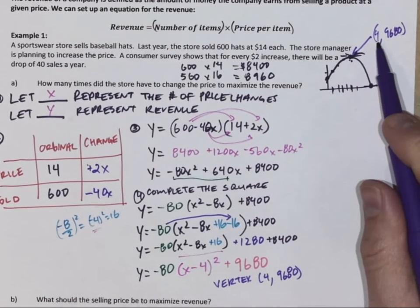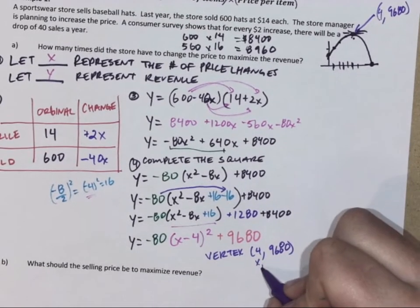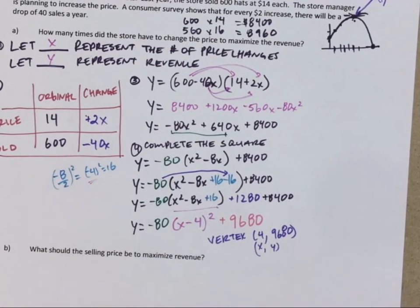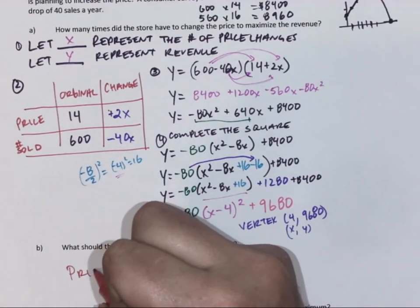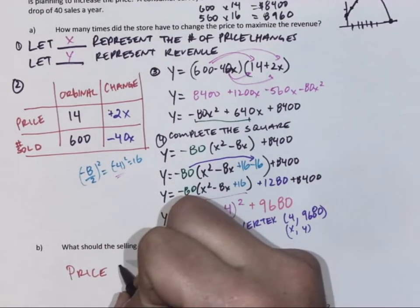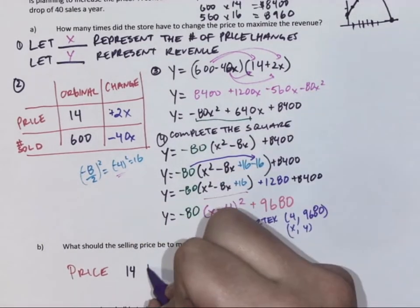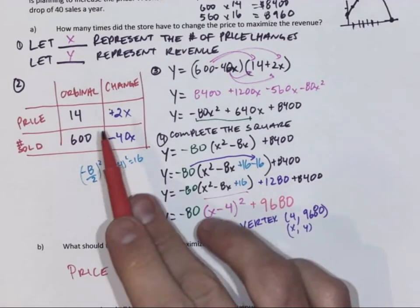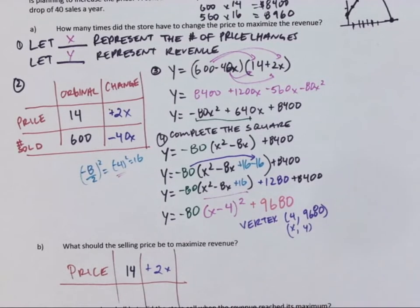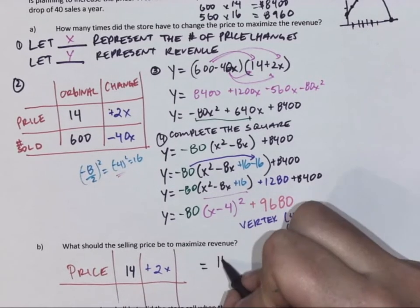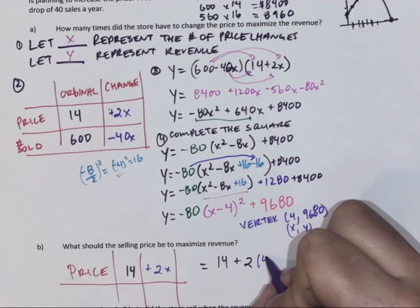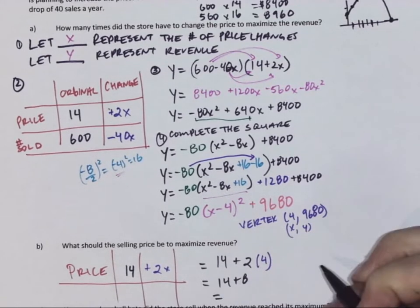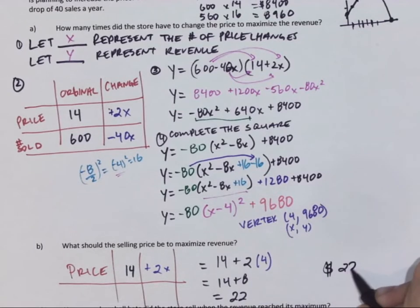That four is not how much they should charge, but remember that's what X is. That's how many price changes. So what should be the selling price? Well, if we go back up here, we said the price is going to be fourteen plus two X. And if we know X is four, then we can sub that in. So that's from right up there. So our new price to maximize the revenue will be fourteen plus two times four. So they should sell the hats for twenty-two bucks.